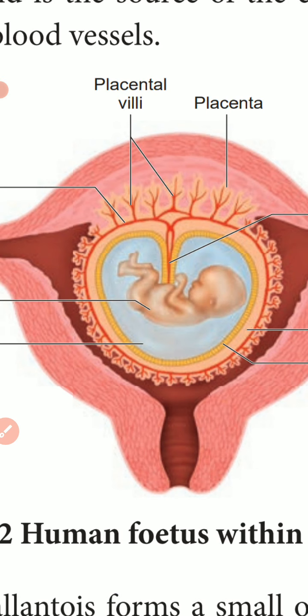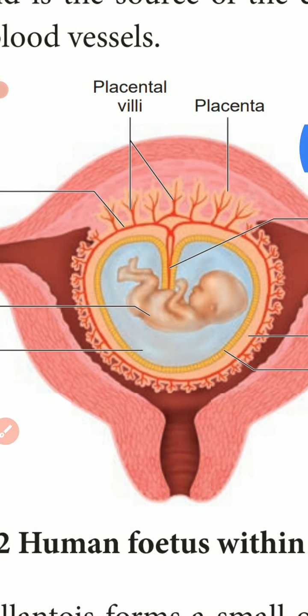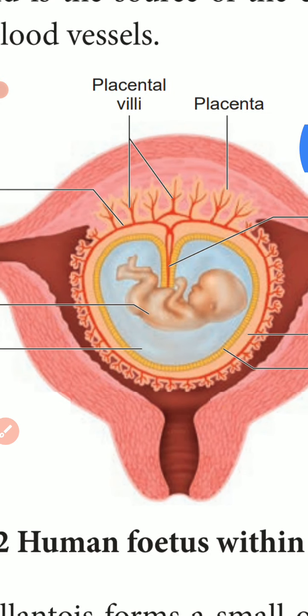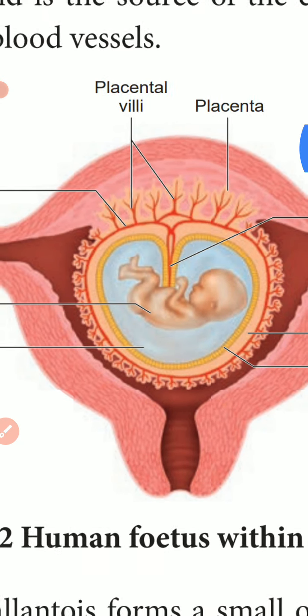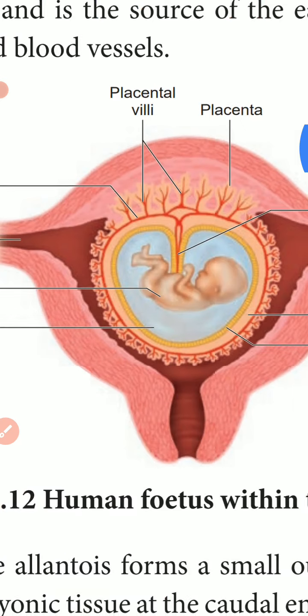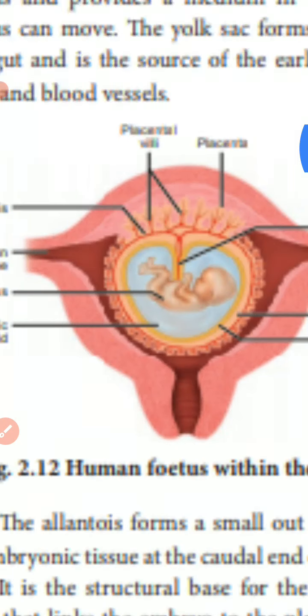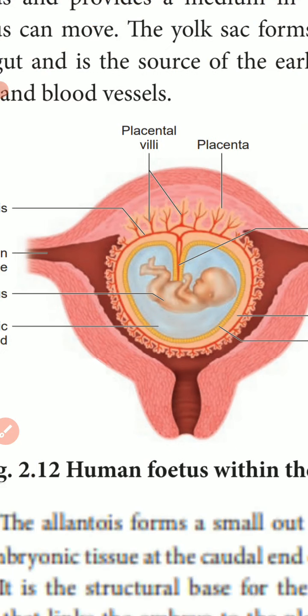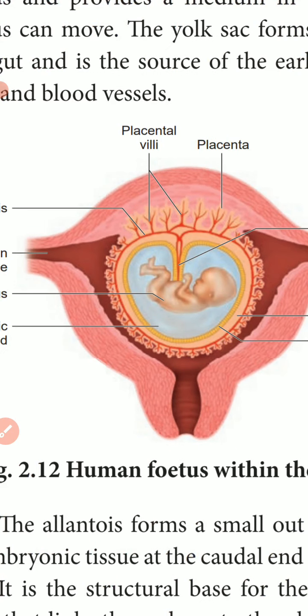The allantois ultimately becomes a part of the urinary bladder — this is important for one-word answers. The next membrane is the Chorion. It is the outermost membrane which encloses the embryo and all other membranes. It also helps in the formation of the placenta.